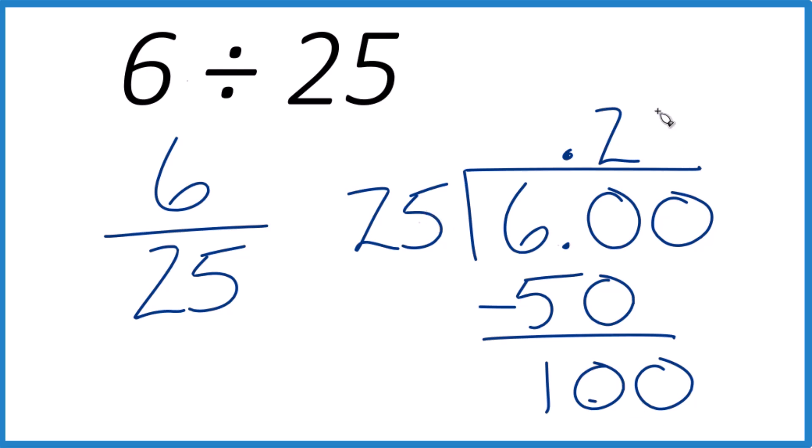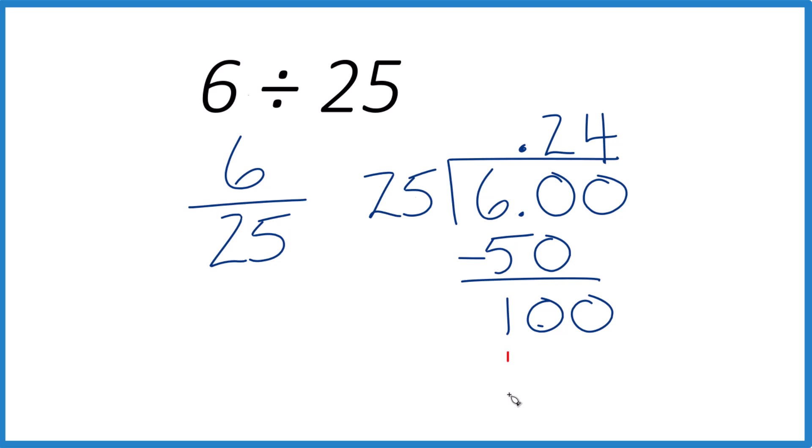4 times 25 is 100, and we're done. So 4 times 25, that's the 100. Subtract, no remainder.